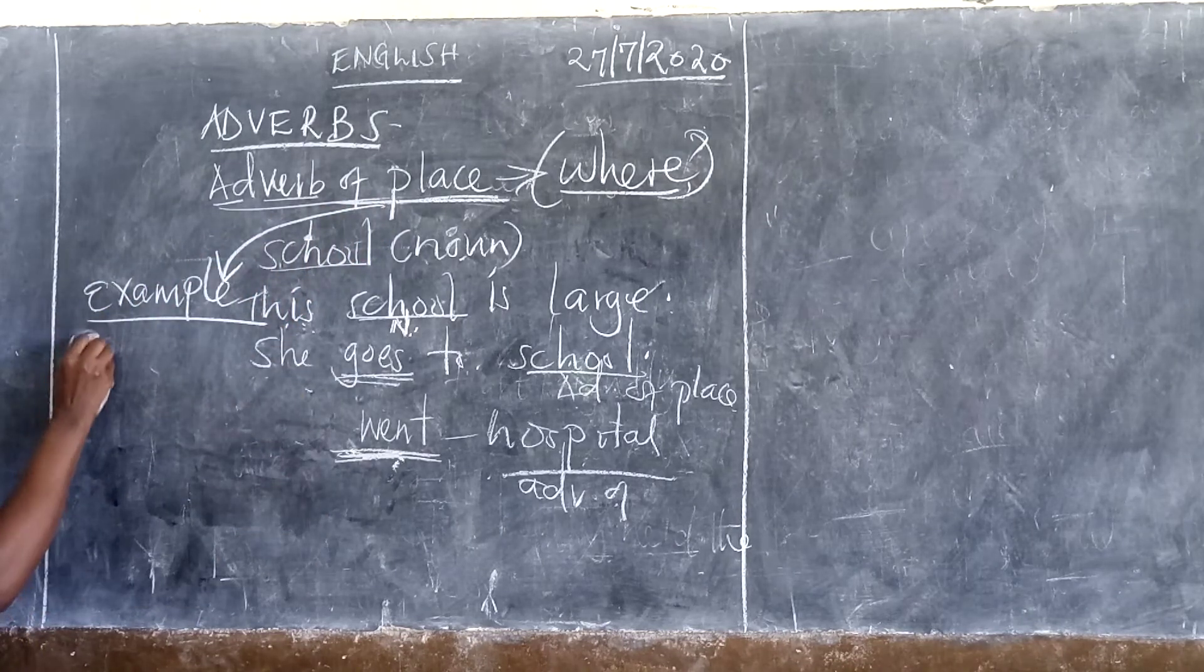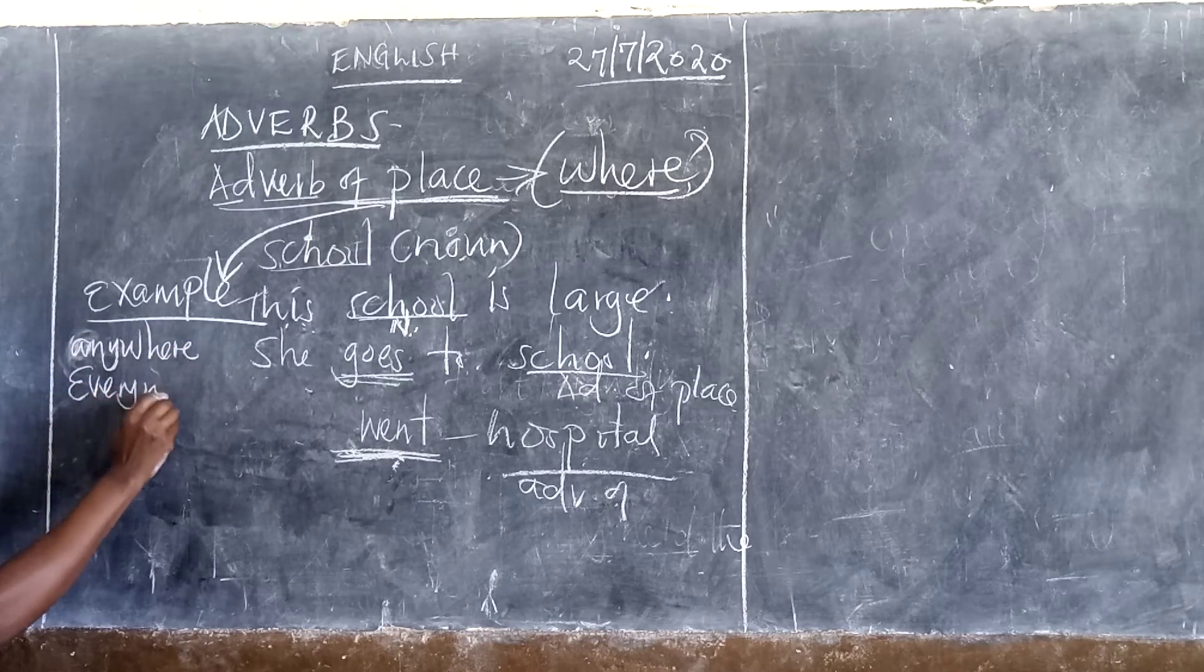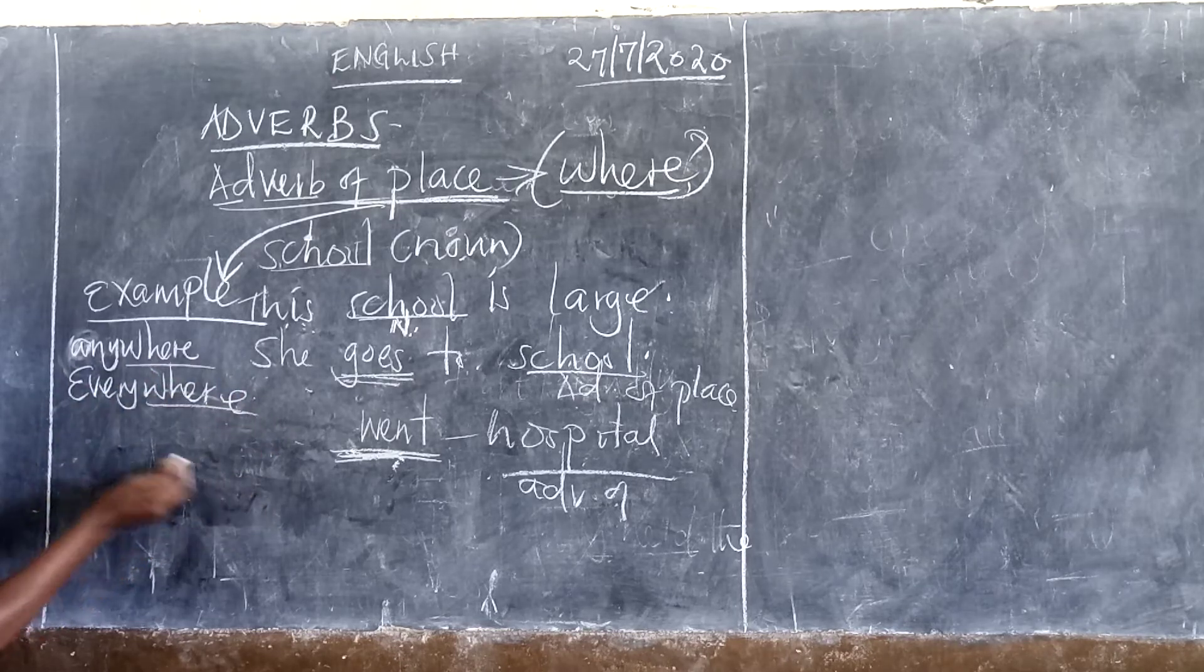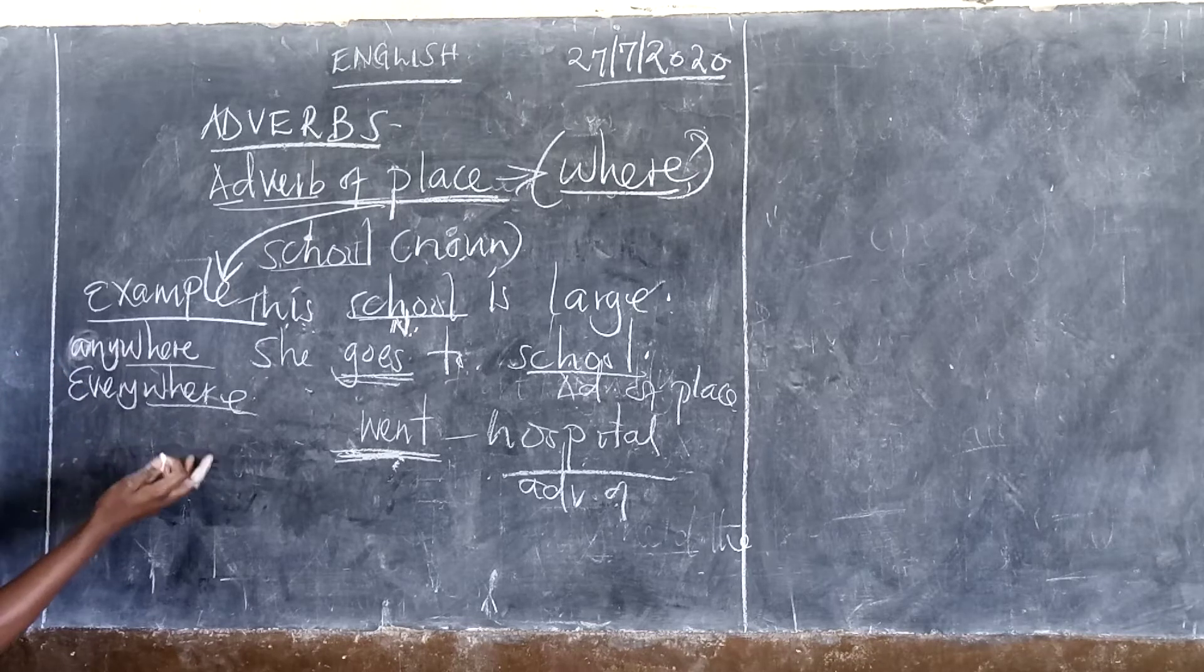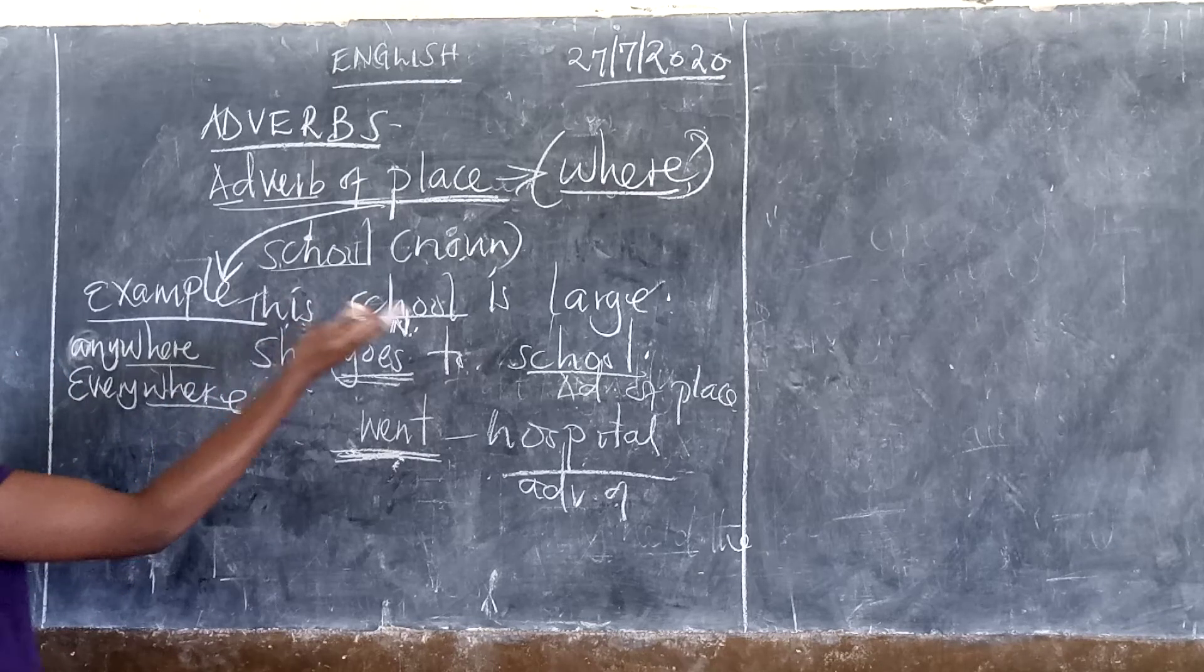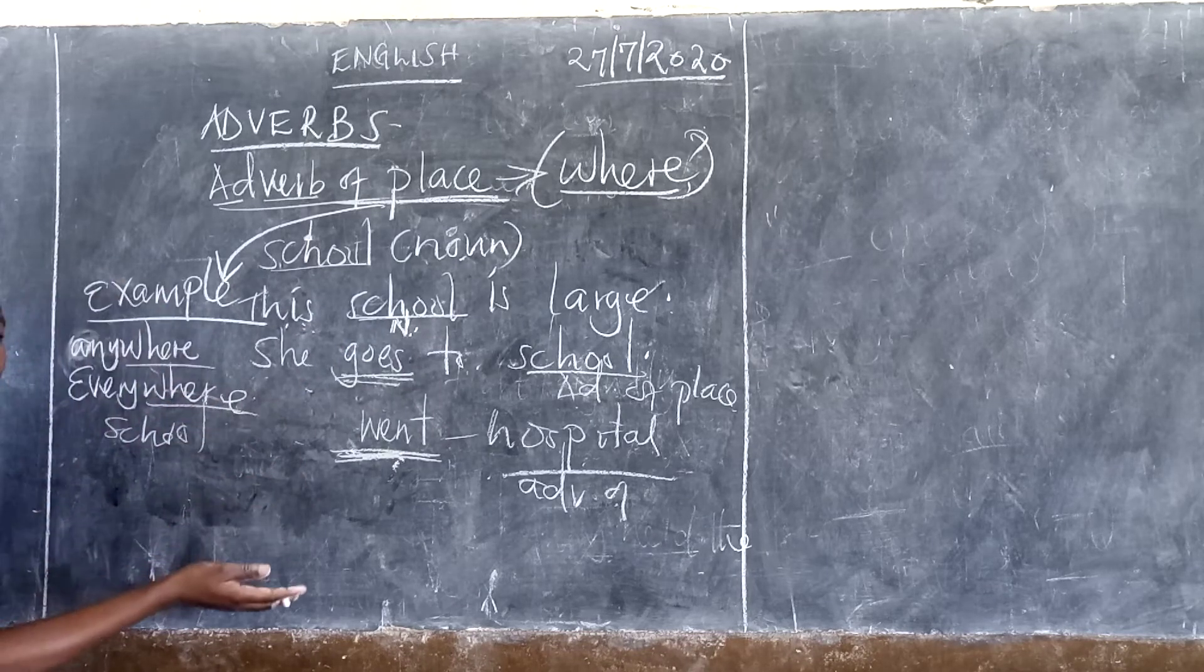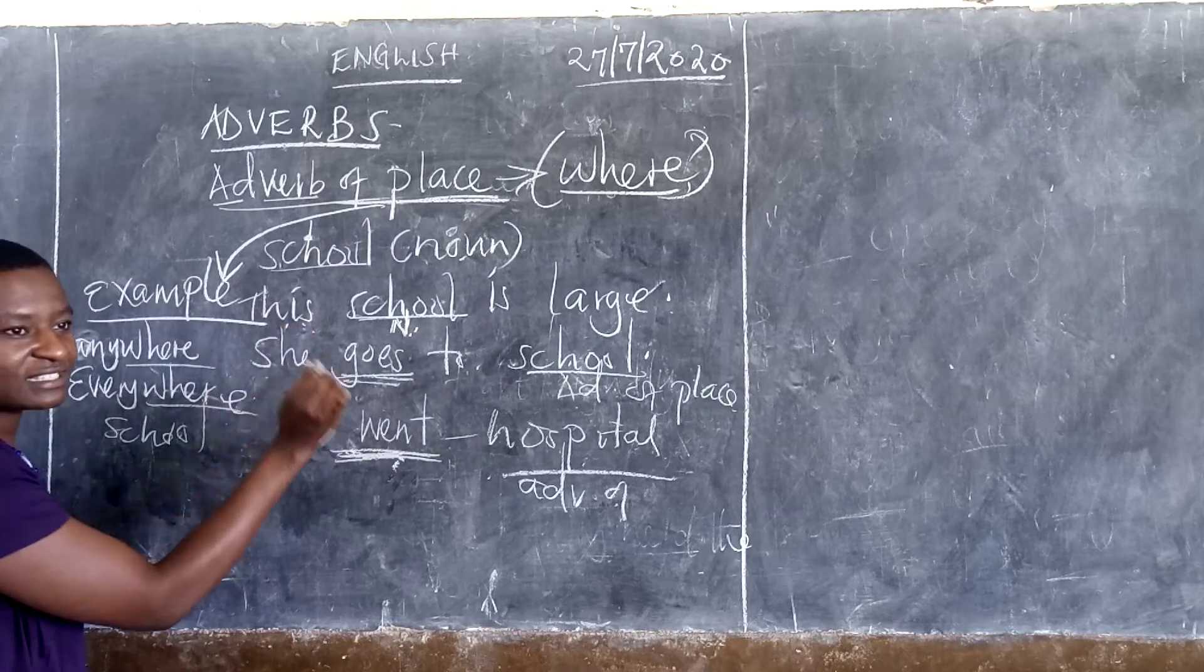We have anywhere, everywhere. If you are a little keen, you just see these words with 'where'. Anywhere, everywhere, elsewhere, all those ones. Then now we narrow down to these others that have been specific, like school, hospital. You know all the places. But now it depends on the way you use it in a sentence.